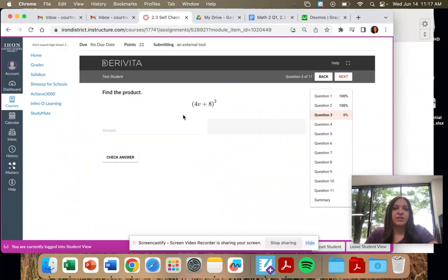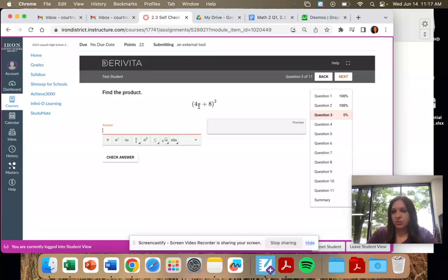So that's our answer. If I'm looking at this and I don't want to write any work, I would take 4V squared. So 4 squared V squared plus 2 times 4 times 8. So 2 times the numbers, which is 64, add the variable, and then 8 squared, second term squared.